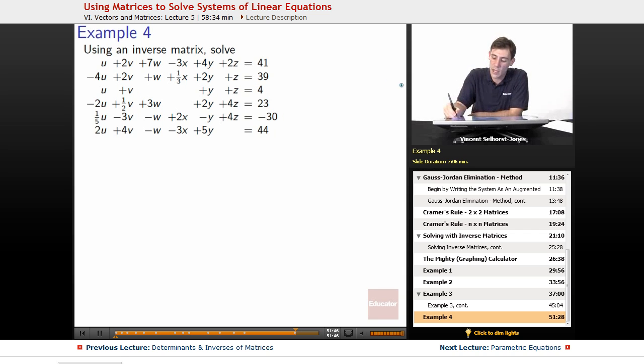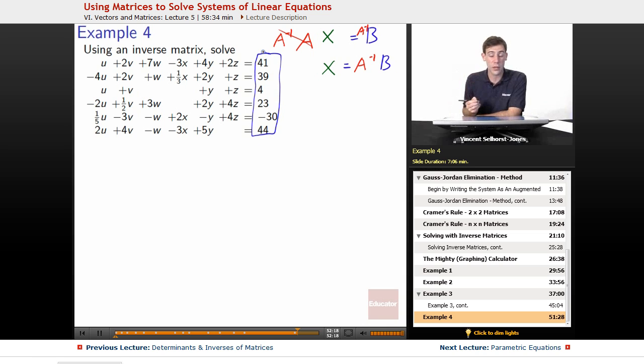Our game plan: remember the idea was that we have the coefficient matrix A times the column of the variables is equal to the column of the constants. So AX equals B. If we can figure out what A inverse is, we can multiply by A inverse on the left side on both cases. A inverse cancels out there and we're left with X equals A inverse times B. We already know what B is. B is this thing right here. So that part's pretty easy. Can we figure out what A inverse is?